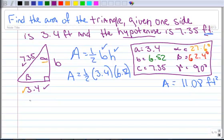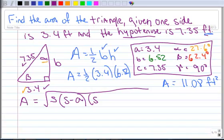We're going to use Heron's formula. So Heron's formula says an area of a triangle is equal to the square root of S times the quantity S minus A times the quantity S minus B times the quantity S minus C.